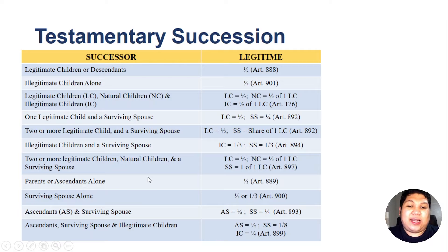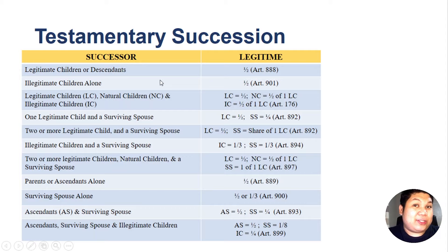When there are two or more legitimate children, a natural or illegitimate child, and a surviving spouse, the legitimate children inherit one half as a whole, the natural child receives one half of one legitimate child's share, and the surviving spouse inherits one share equivalent to one legitimate child's share. When there are parents or ascendants alone, they get one half — the same share as the children — but they can only inherit if there are no legitimate children or descendants.